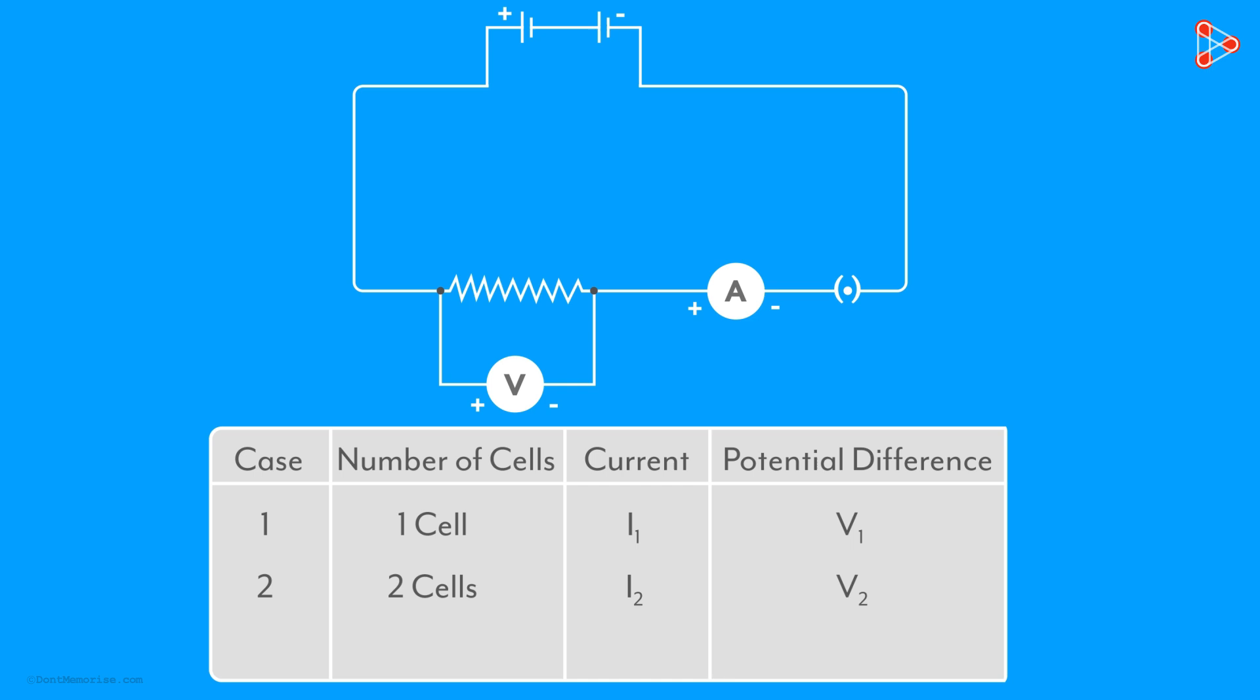And then repeat the same procedure for the third case when three cells are used as the source. You will notice that as the number of cells increases, the current as well as the voltage increase. But are they increasing proportionally?